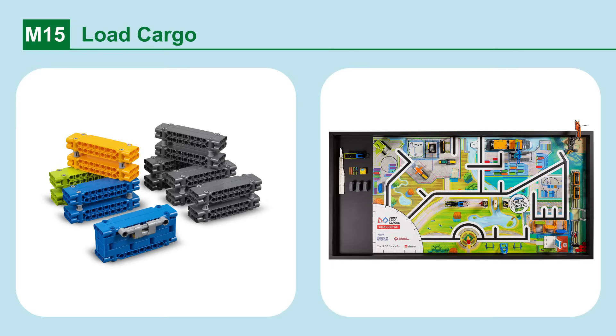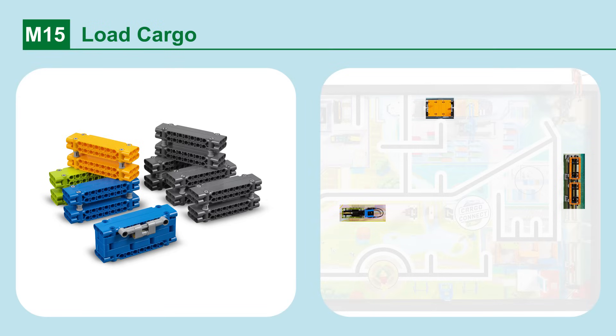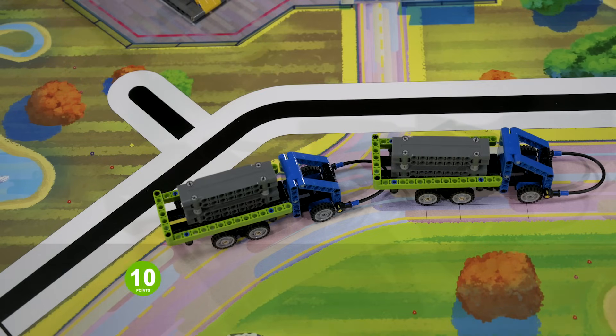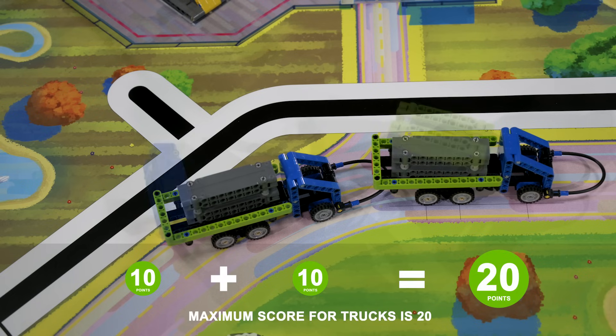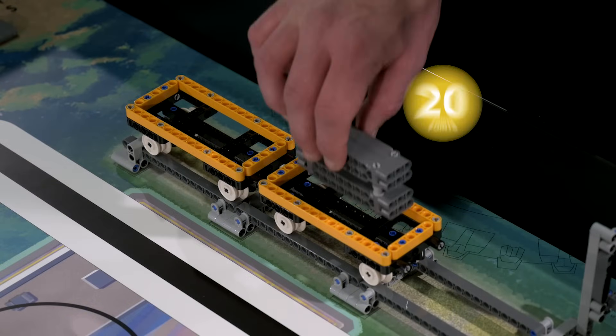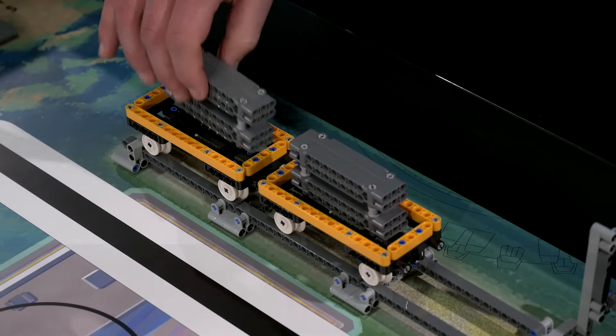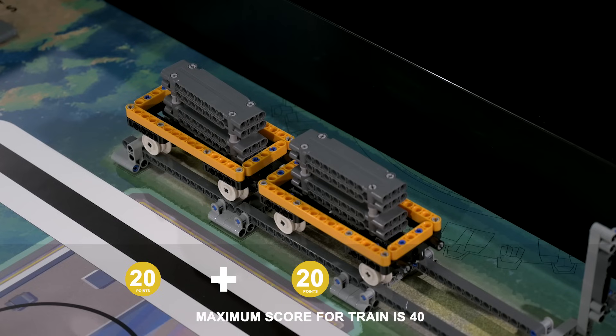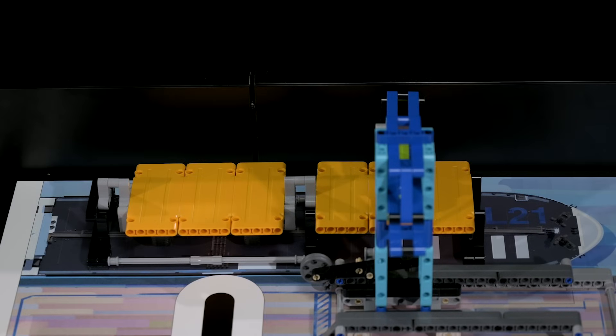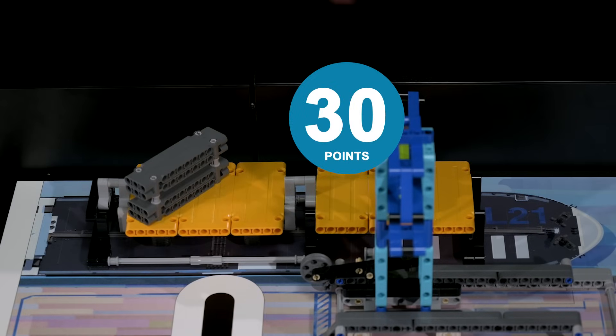Mission 15. Load cargo. Load cargo containers onto different forms of transportation. A maximum of two containers can score per form of transportation. If there are any containers loaded onto the platooning trucks. If there are any containers loaded onto the train. If there are any containers loaded onto the west deck of the cargo ship.